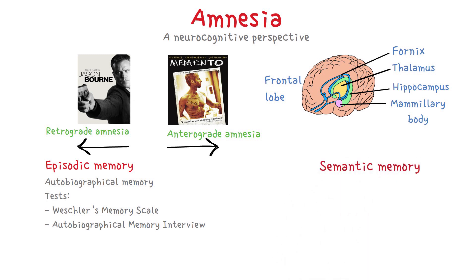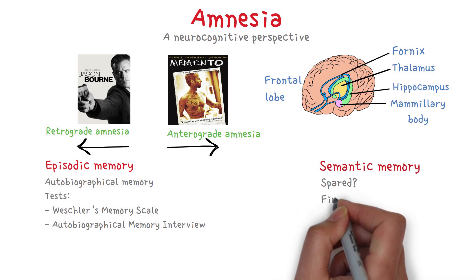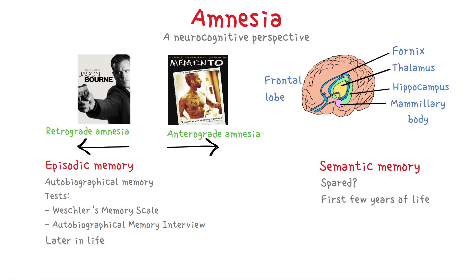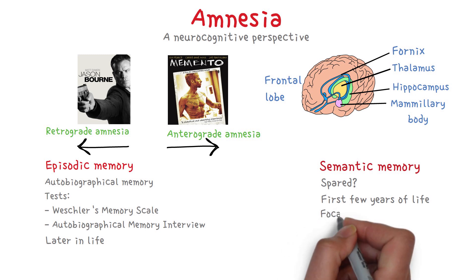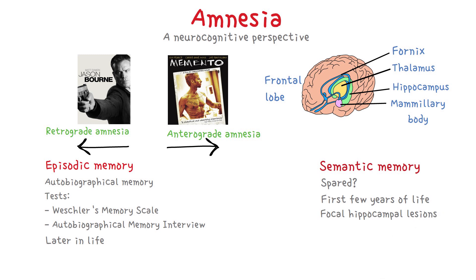Moving on to semantic memory — at first sight, amnesic patients appear to retain their knowledge of language and the world, which was initially taken as evidence that semantic memory is intact. However, a more complex picture has emerged. One critical issue is the age at which information was attained. More semantic knowledge is attained within the first few years of life, while episodic memory develops later. Given that amnesia tends to preserve relatively older memories, the question is whether the apparent sparing of semantic knowledge reflects its early attainment. Studies show some impairment to semantic memories, especially after focal hippocampal lesions, though semantic memories are often less vulnerable compared to episodic memory.